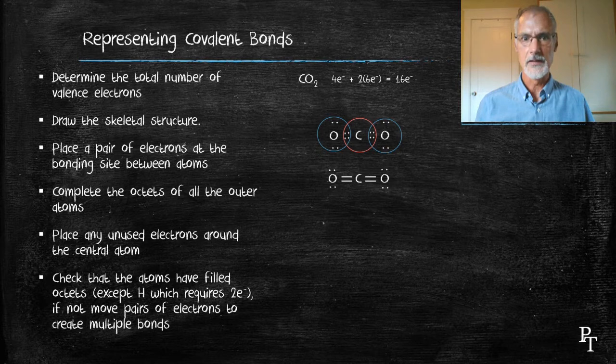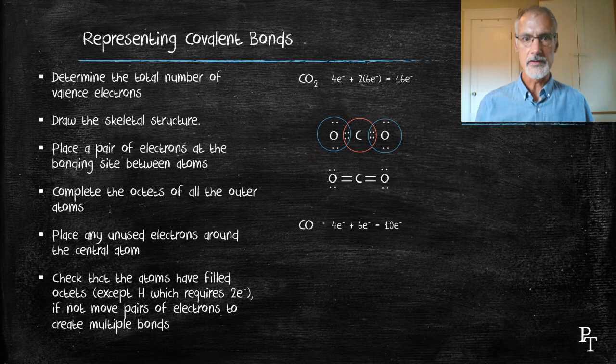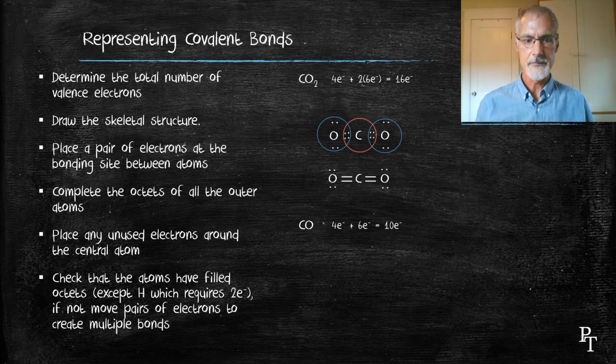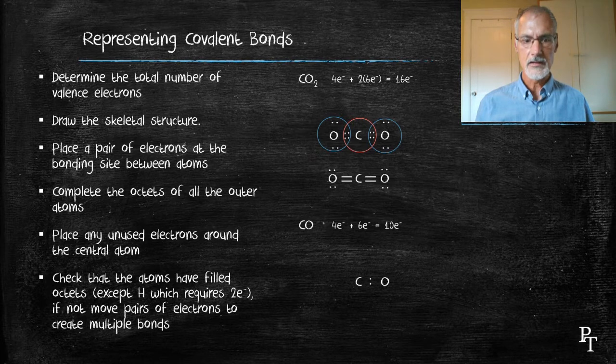Let's try carbon monoxide. Four electrons from the carbon, six electrons from the oxygen, ten total. Carbon in the middle, oxygen on the outside. Place electrons at the bonding site. Complete the octets of the atoms on the outside.